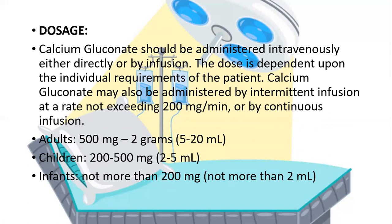The dose is dependent upon the individual requirement of the patient, according to their BMI, physical condition, and disease condition. Calcium gluconate may also be administered by intermittent infusion at a rate not exceeding 200 mg per minute, or by continuous infusion. The doses for adults should be 500 mg to 2 grams. For children, it should be 200 to 500 mg. For infants, not more than 200 mg.